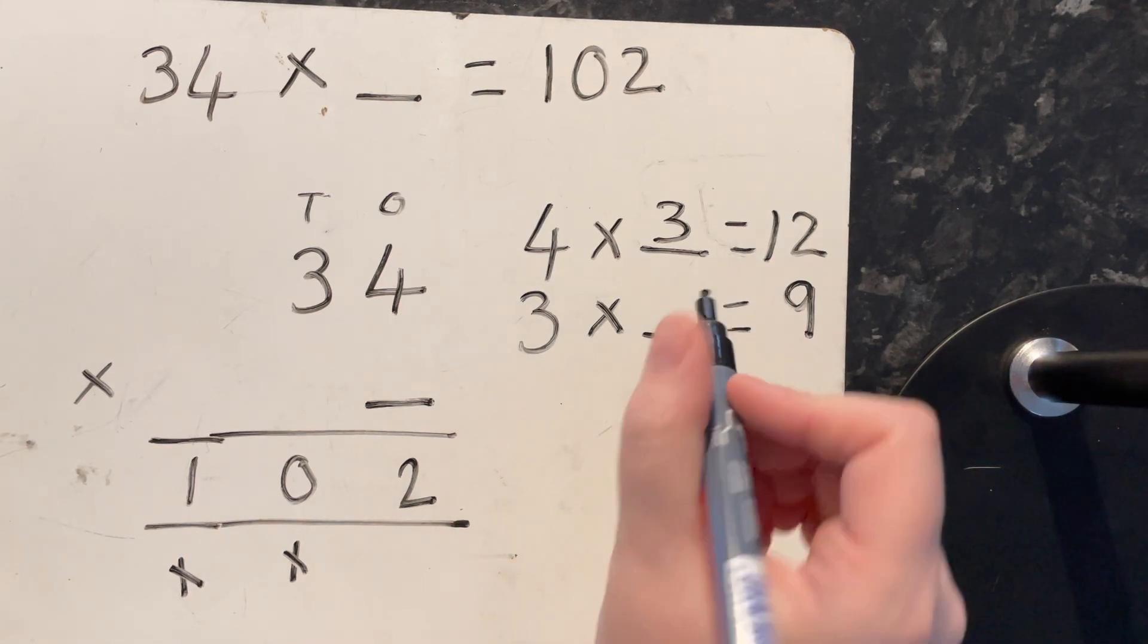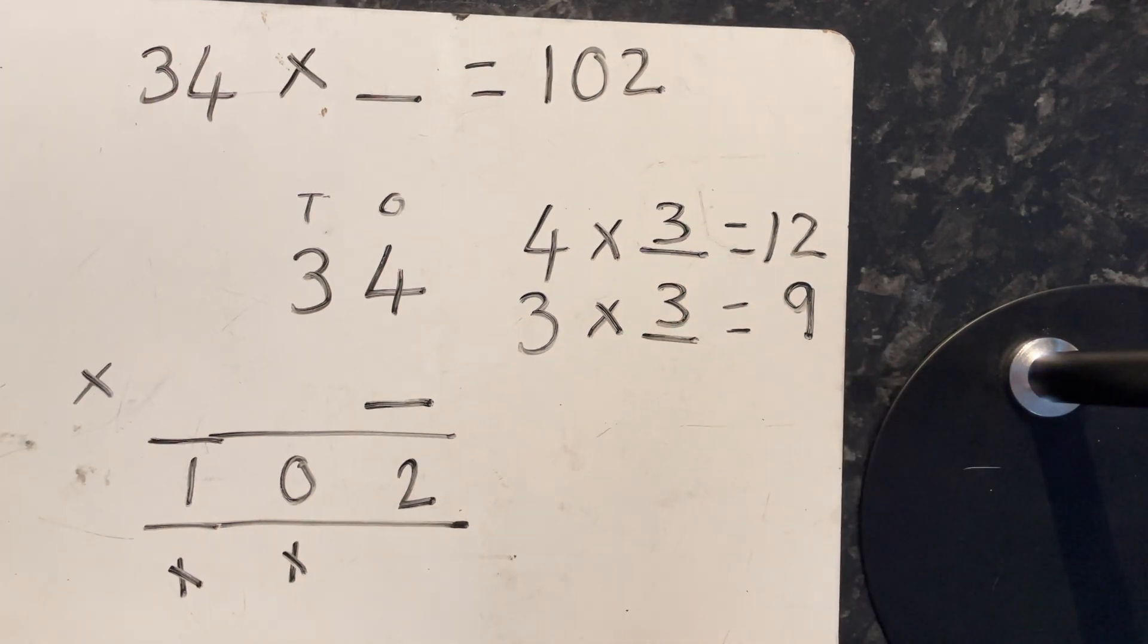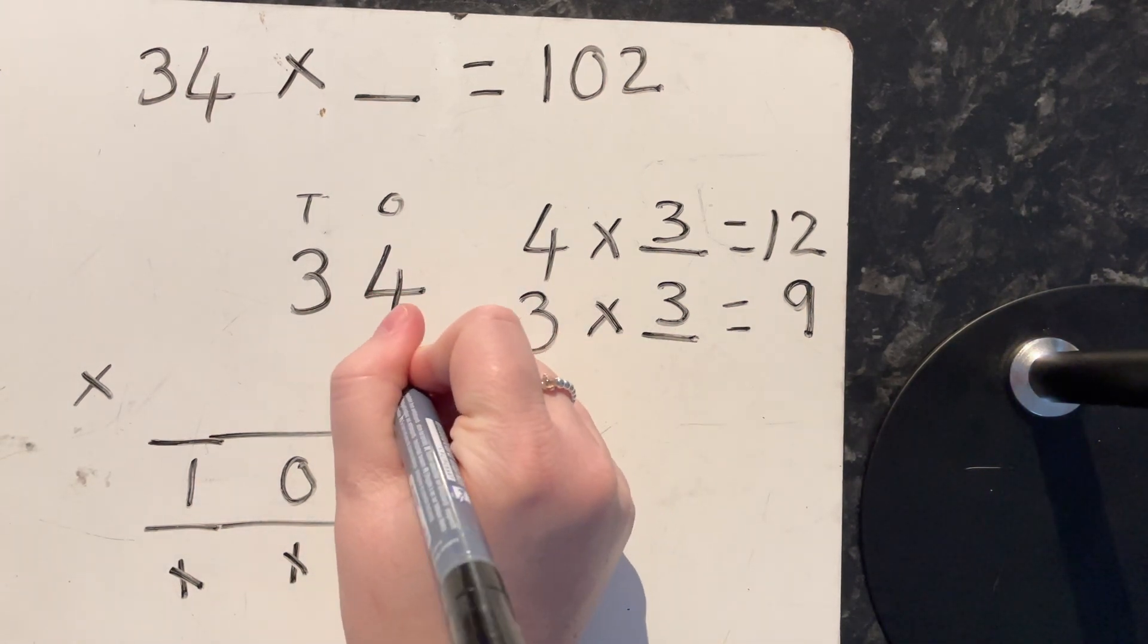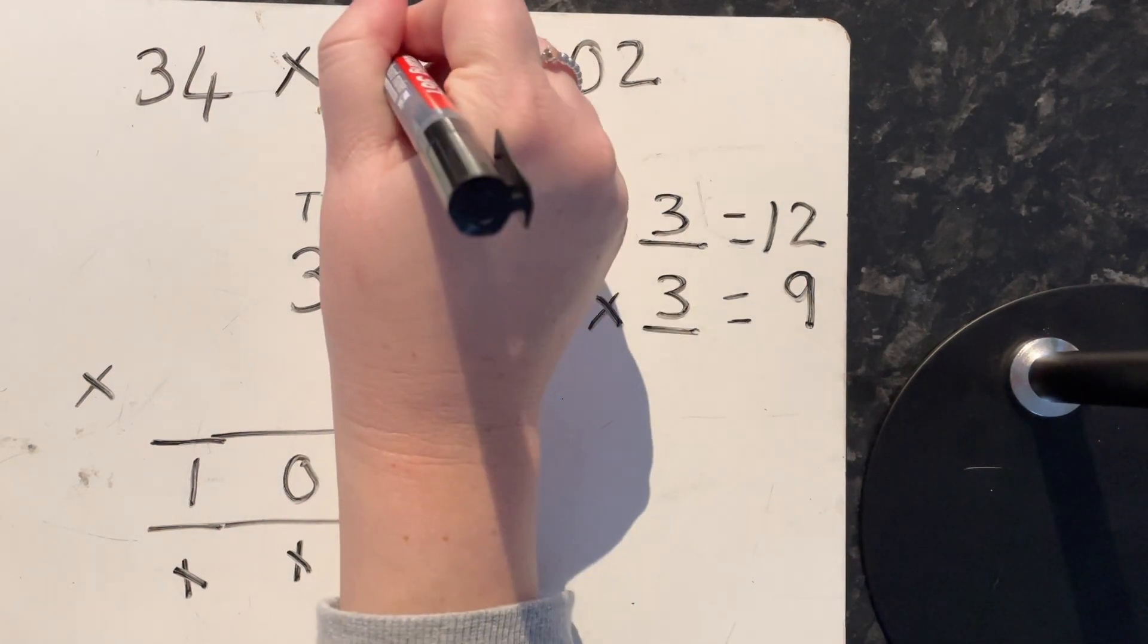So 3 times 3 equals 9. I'm just going to check that. So 3 lots of 3: 3, 6, 9. Yes, so our missing number must be 3.